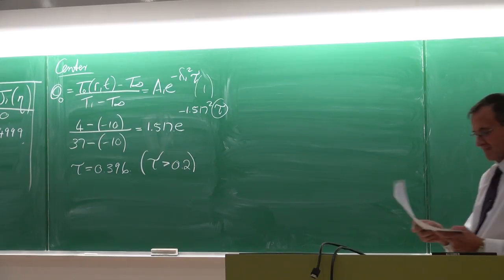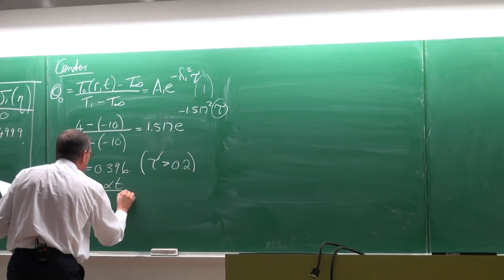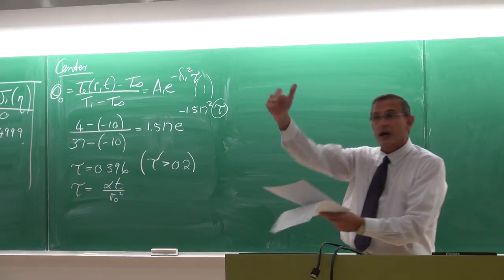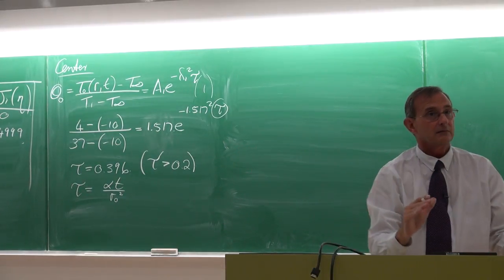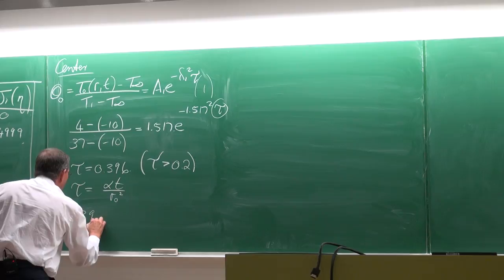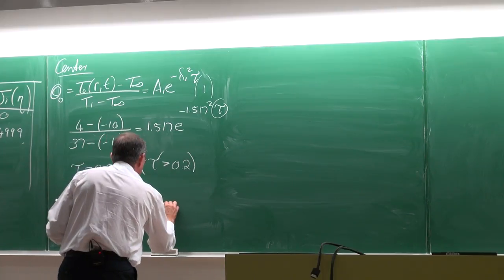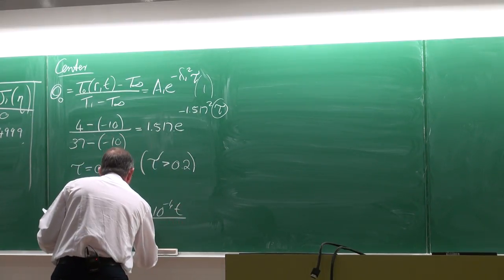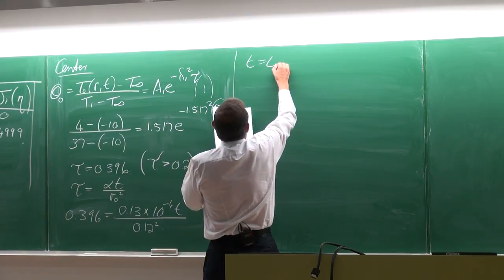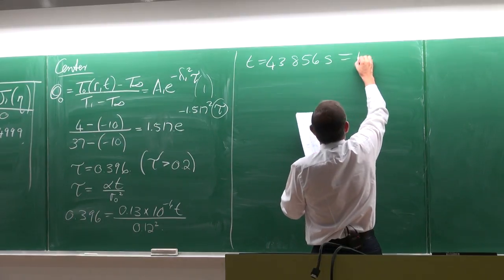Now convert tau to actual time using τ = α·t/r₀². So: 0.396 = (0.13×10⁻⁶ · t) / (0.12)². Solving: t = 43,856 seconds, which equals 12.2 hours. That is how long it takes for the center temperature to drop to 4°C.